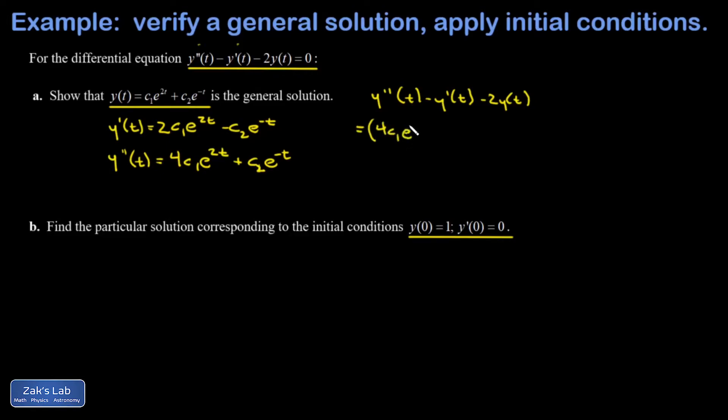...that's 4c₁e^(2t) + c₂e^(-t) minus y prime, that's 2c₁e^(2t) minus c₂e^(-t), minus twice the original y, which is c₁e^(2t) plus c₂e^(-t).